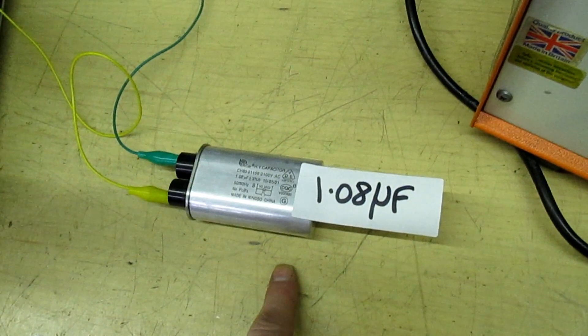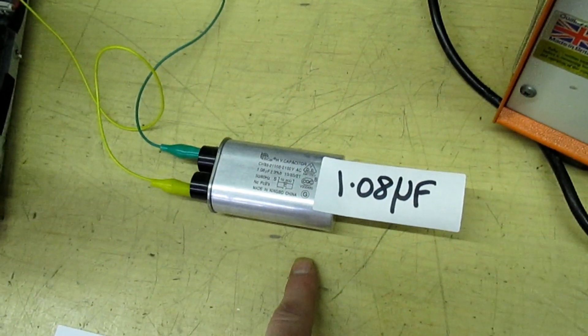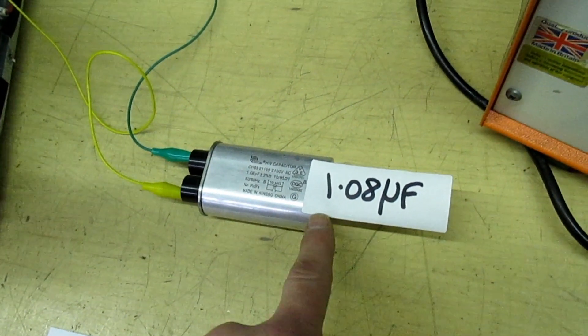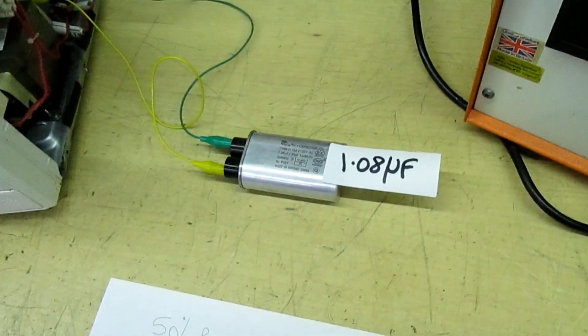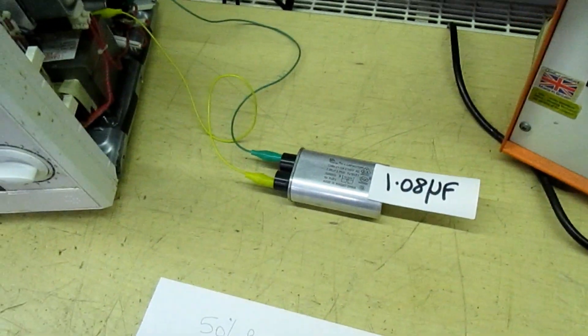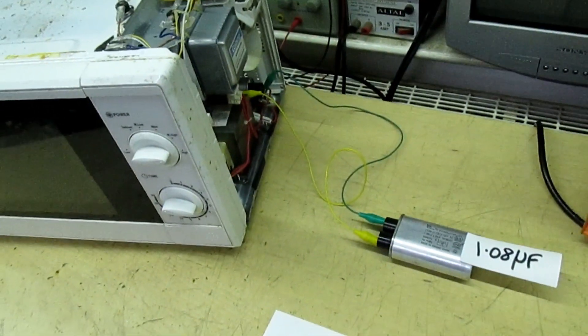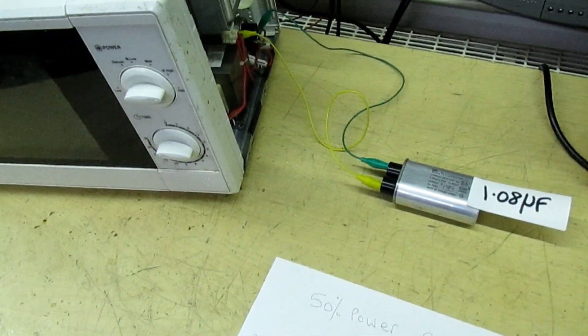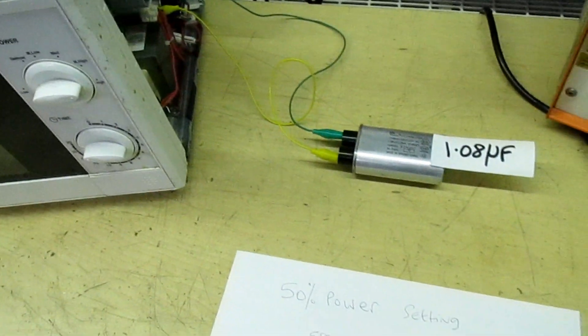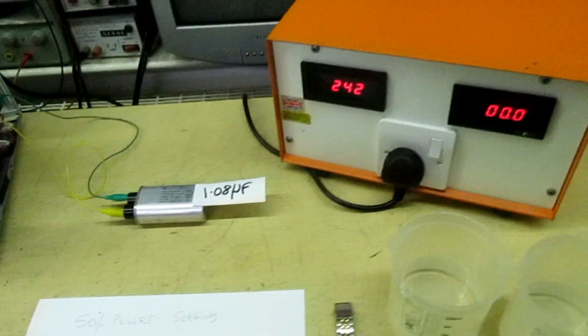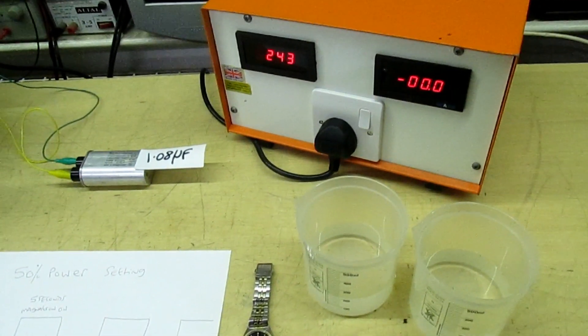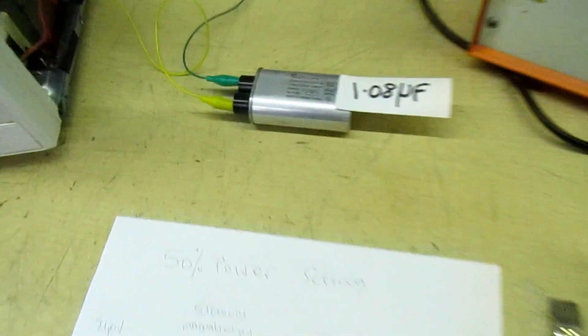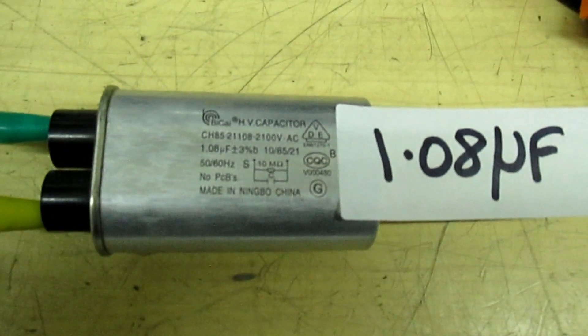Now the capacitor makes quite a difference on the output of the microwave power. So here we've got a 1.08 µF. If you swap that for a lower one, you'll reduce the output power from the microwave, and also you'll reduce the amount of input power you need for your inverter. So I've set up a little demonstration here. I've got a current meter and a voltage meter.